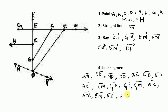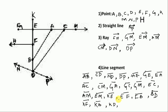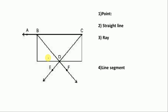Line segments EF, FB, BD. Now we take alternate points: KF, KB, KD, EB, ED, NP, FD. These are the line segments. The first figure is over. Let's go to the next figure. Here points are A, B, C, D, E, F.